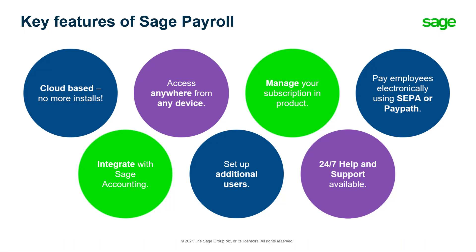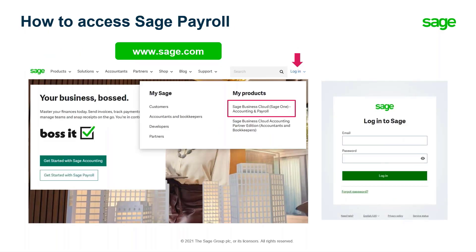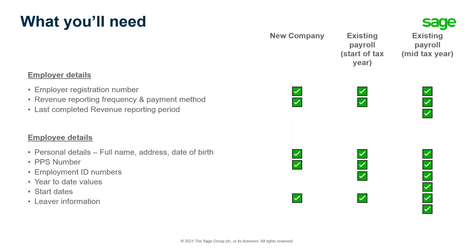To log in to your cloud-based Sage Payroll software, go to www.sage.com, click the login option at the top, and choose Sage Business Cloud Accounting and Payroll. You will be presented with a login screen where you enter your email address and password used when you initially signed up. Now let's talk about what you will need to set up your payroll. We've put together a checklist — the requirements vary depending on whether you are a brand new company setting up for the first time or if you have existing employees and are moving your payroll processing to Sage Payroll.